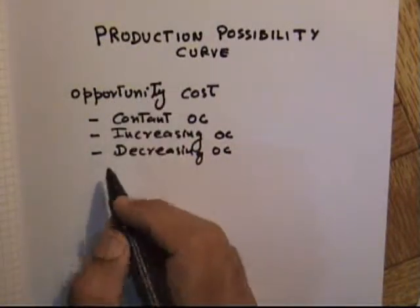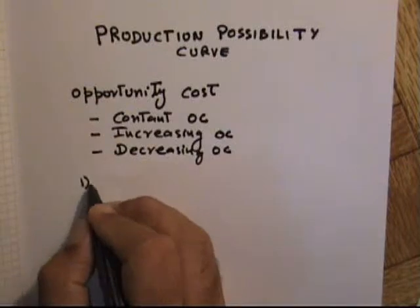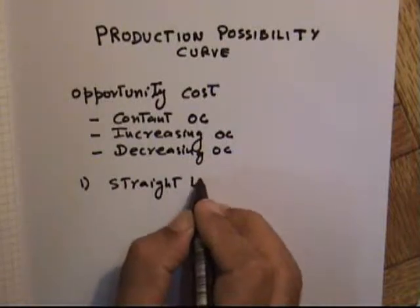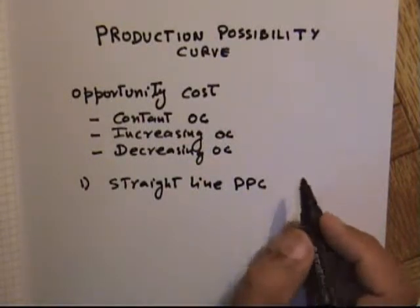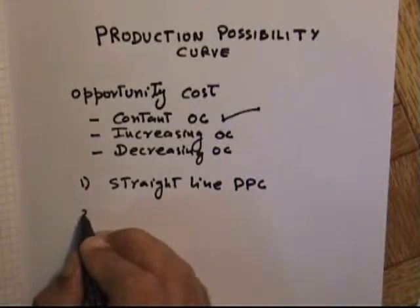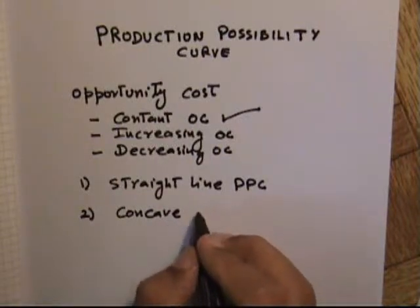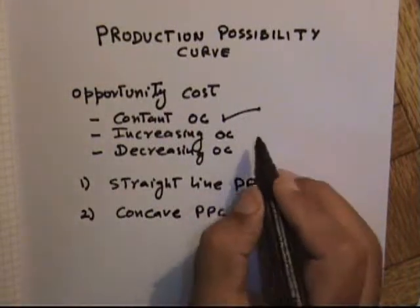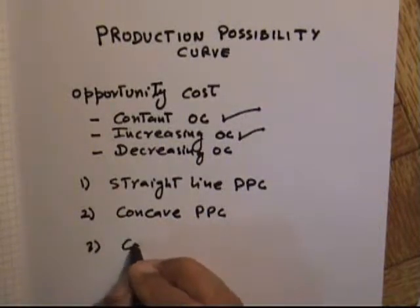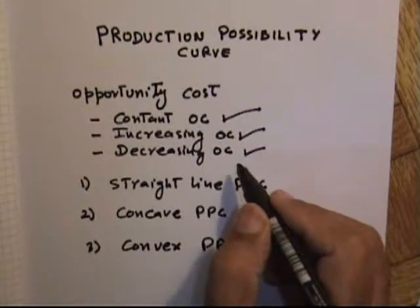Theoretically speaking, the Production Possibility Curve also assumes three different shapes. The first is a Straight Line Production Possibility Curve, which is due to Constant Opportunity Cost. The second is a Concave Production Possibility Curve, which is due to Increasing Opportunity Cost. And the third is a Convex Production Possibility Curve, which is due to Diminishing or Decreasing Opportunity Cost.